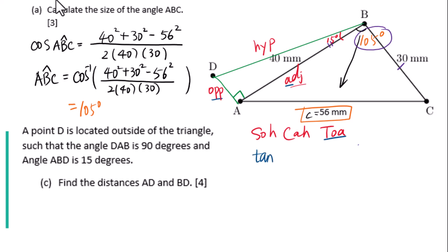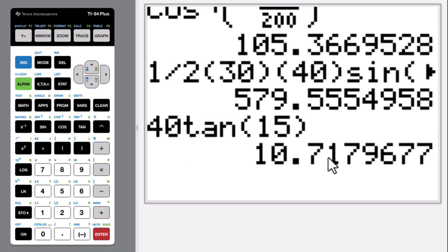Tangent 15 degrees equals AD over AB is 40. Cross-multiply. AD equals 40 tangent 15 degrees. Answer is 10.7.